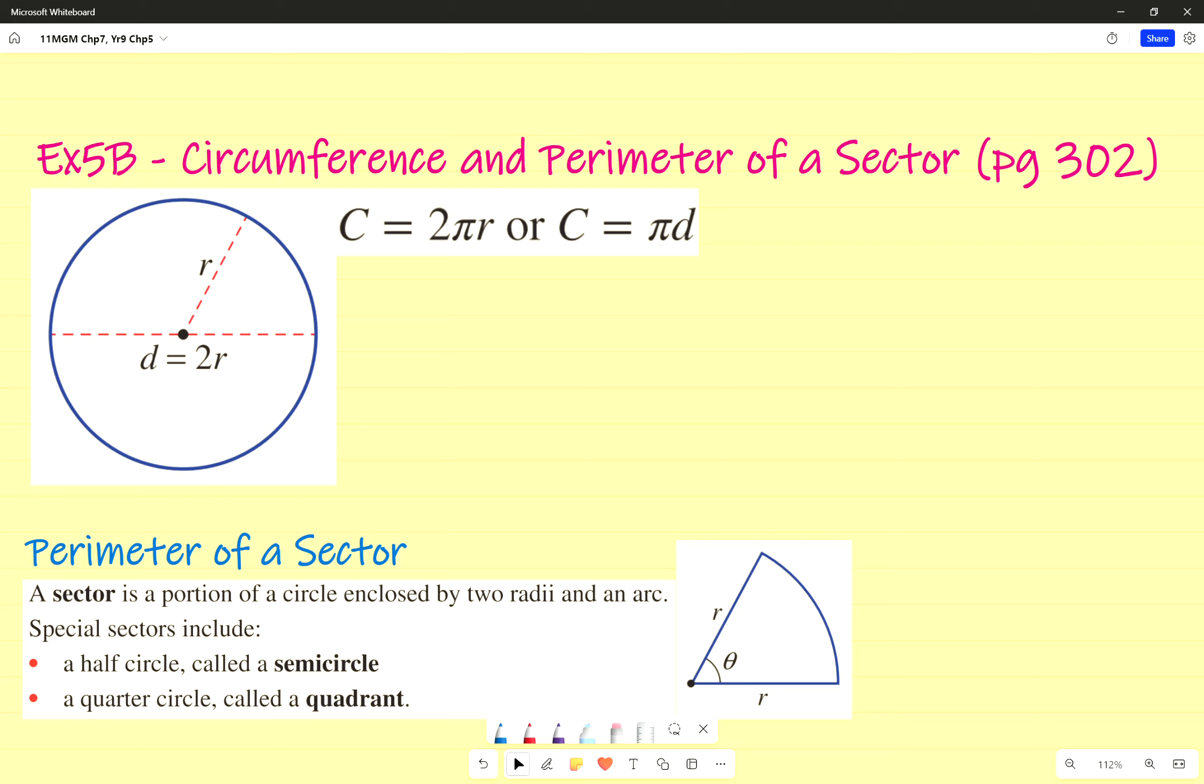So the circumference, which is a reminder, it's the perimeter of a circle, is double pi times R. If you've got a calculator, you'd be expected to put it in your calculator. If you don't, just leave it as pi. No need to get your calculations too complicated.